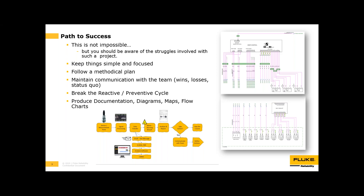Follow a methodical plan — we'll walk through the steps of how to keep this organized. Another key component is to maintain communication with the team. This includes any catches you get — if you find something before it fails, tell everyone. You also need to tell everyone when something gets missed or fails, so you can come back and see why. And importantly, let everyone know when you're at a neutral position — status quo, everything's normal. You want some type of report or dashboard that keeps the team knowing what's going on.